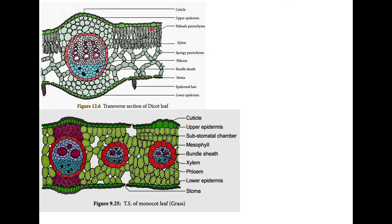You can find epidermal hair on the dicot leaf with reticulate venation. You will see epidermis on epidermis. Epidermis is made up of compactly arranged cells, just like your roots and stem. Now, the epidermis has a thick cuticle above the upper epidermis as well as lower epidermis, and all those functions are attributed to the cuticle.